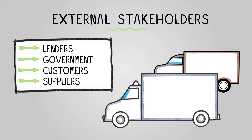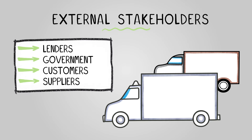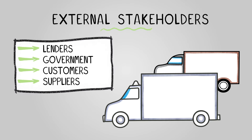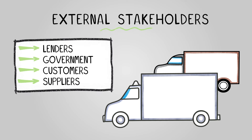The last external stakeholder we'll look at is suppliers. If you're a supplier, financial statements help you evaluate whether a business can pay for the goods or services you offer, especially if you offer trade credit. You want to ensure that you're investing your resources wisely.